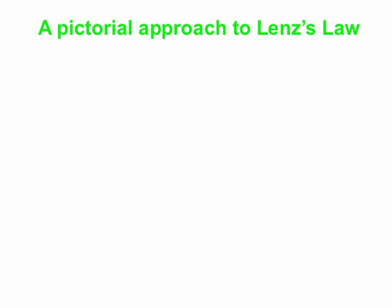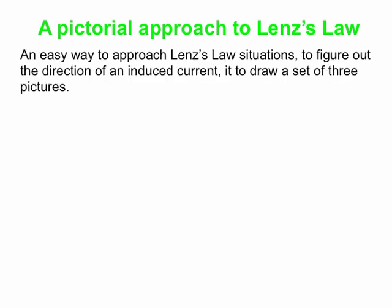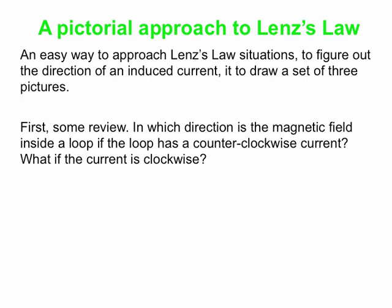So what we're going to do is take a pictorial approach to Lenz's Law. All we're going to try to do is figure out what direction the induced current is around a loop in a particular scenario. We're going to draw a set of three pictures in each case, to figure out the direction of current that's induced in a loop when you change the magnetic flux through it. Before we get to the pictorial method, we need a little review, because this is important for how to do the pictorial method.